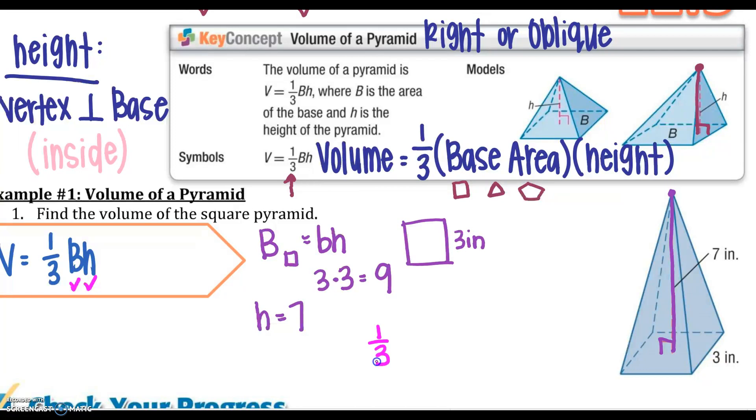I have my B and I have my H, so I'm going to say 1 third, 9 times 7. When I solve that out, I would get 21 inches cubed. Now, you're wondering maybe why it's 1 third.